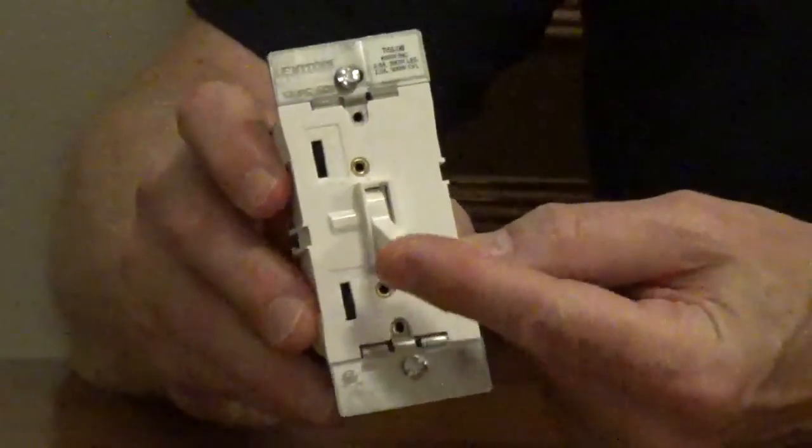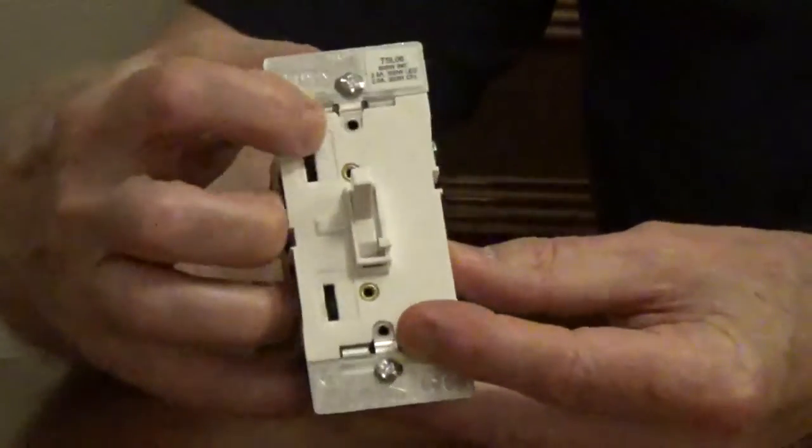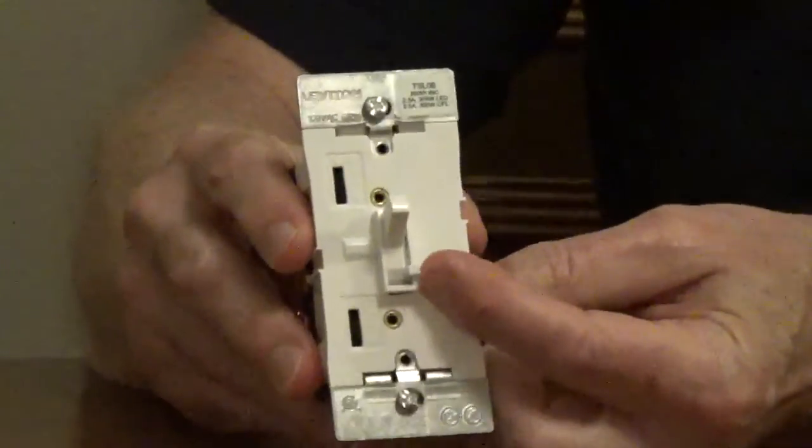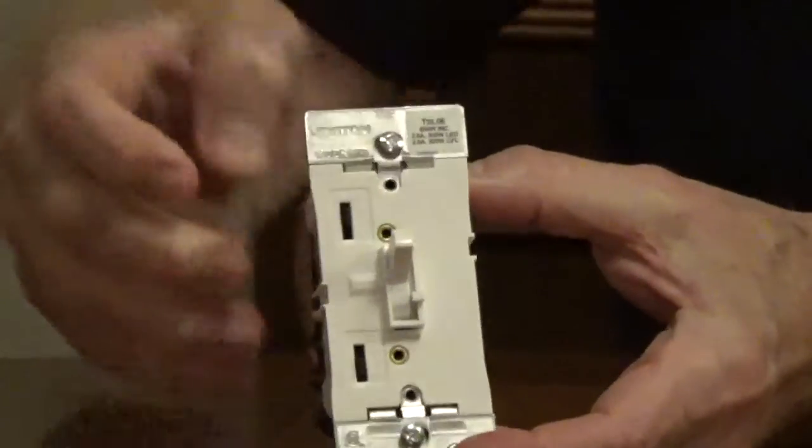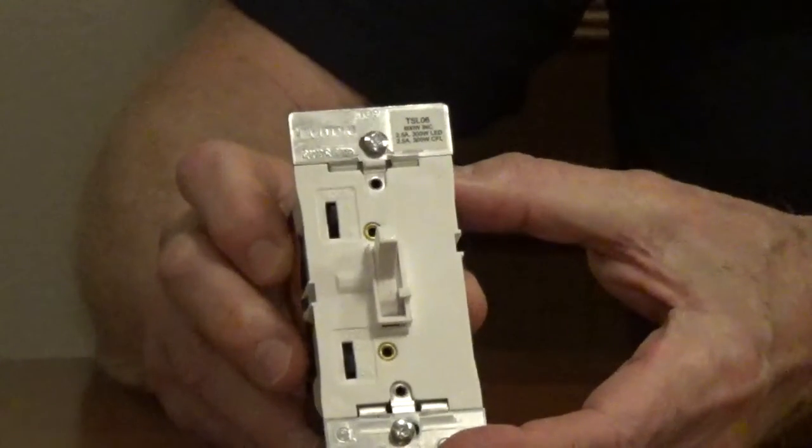Now you're going to turn it on, flip this to B, slowly move up the slide until there's no flickering, and flip it back to A, and now you've locked in the minimum load level.